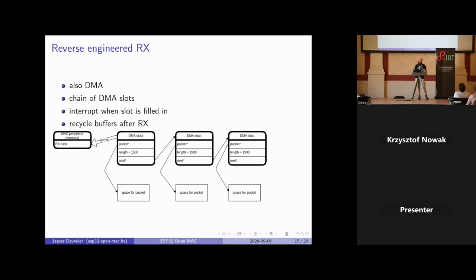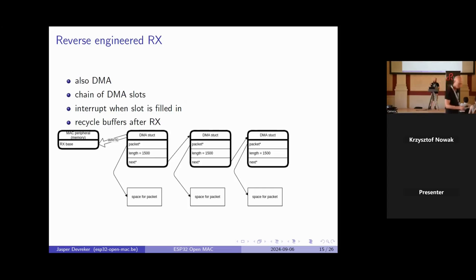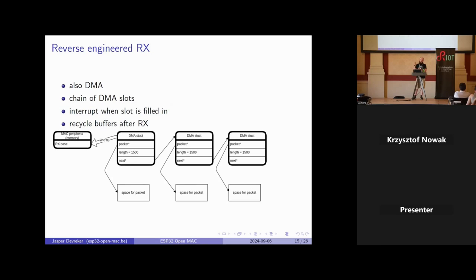Here's how RX works internally. You have DMA structures containing pointers to buffers where packets can be received, and these are put in a linked list. You write the first entry of the linked list to a memory peripheral, and then the Wi-Fi peripheral knows: if I receive a packet, I'll put it in this DMA structure. It also fires an interrupt so you can handle this asynchronously. After you've finished handling a received packet, you can reuse the packet buffer, put it in another DMA struct or even the same one, put it back in the linked list — that way you don't have to constantly allocate and deallocate memory.